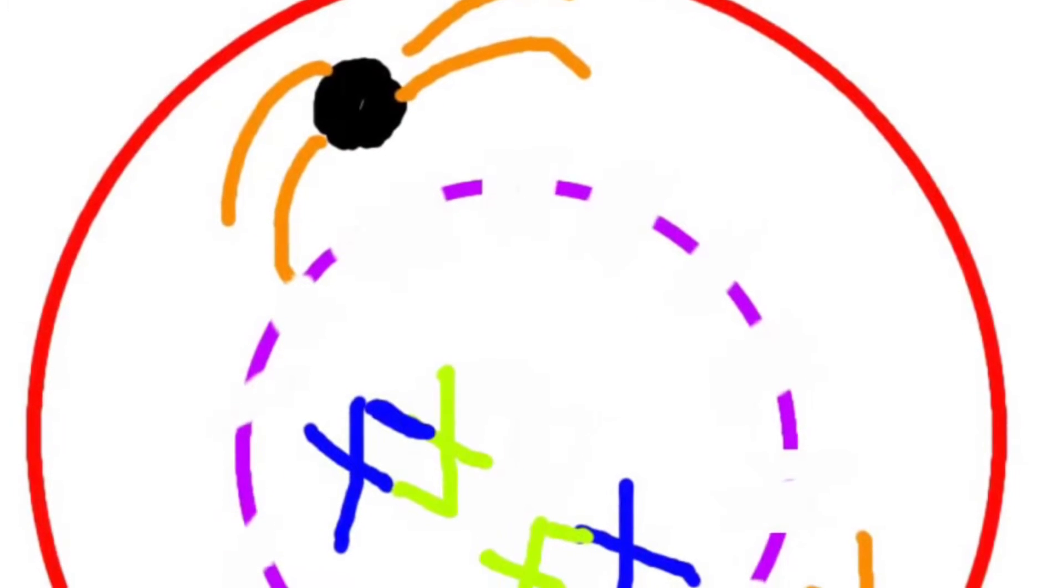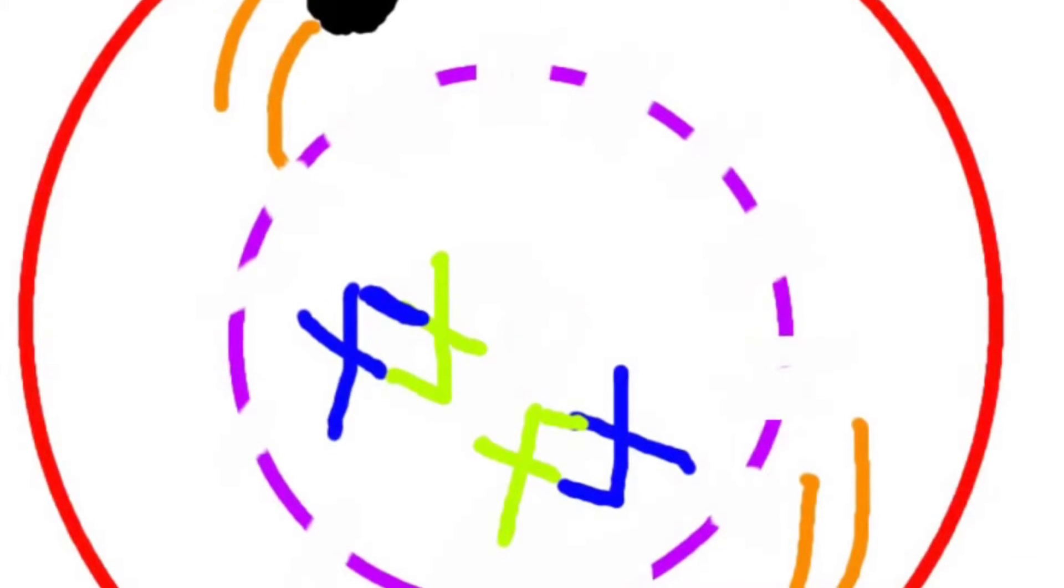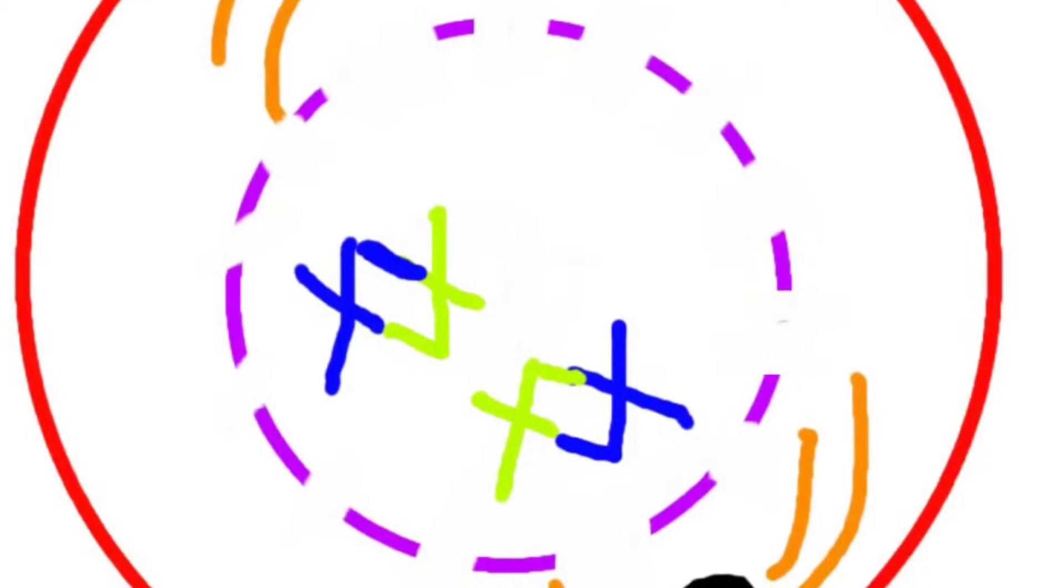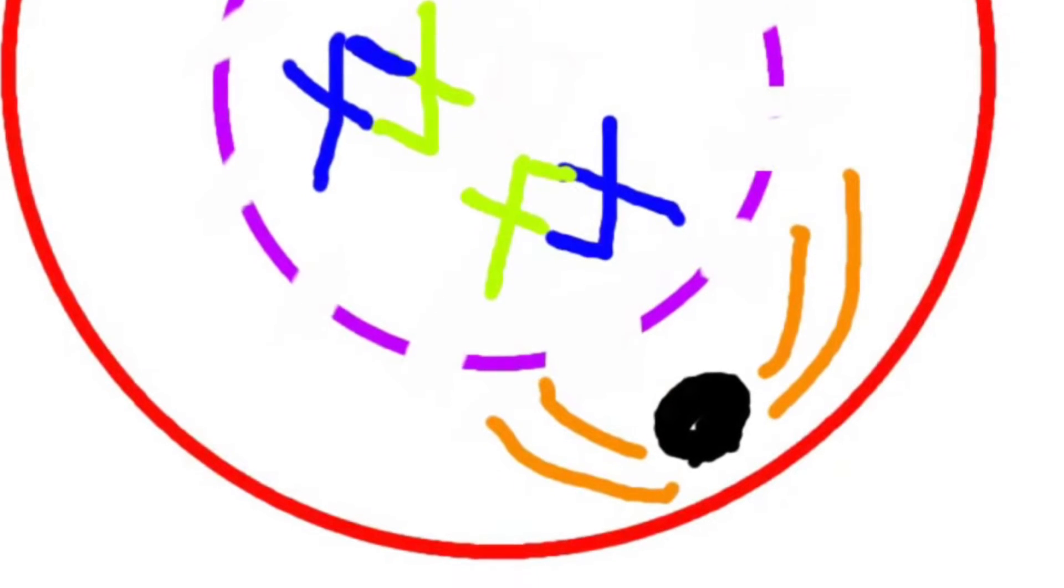Homologous chromosomes pair to form bivalents. Then the centrioles divide and move to opposite sides of the cell. These same bivalents duplicate to form tetrads, or chromatid groups. The nuclear membrane disintegrates, and crossing over occurs.